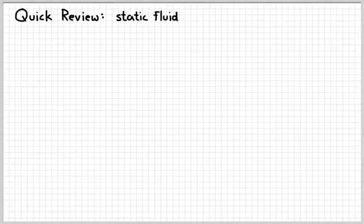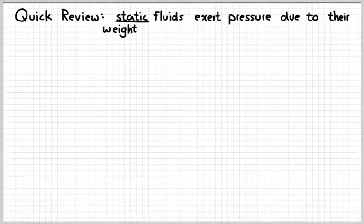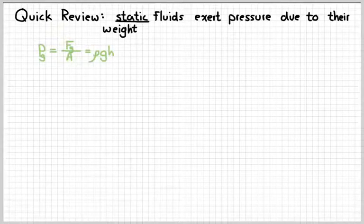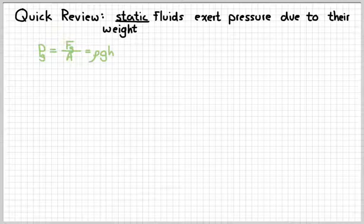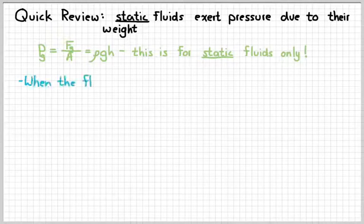So as a real quick review, just so that we don't get ourselves confused later on. Remember that a static fluid, static meaning at rest, exerts pressure on the sides of its container due to its weight. So our basic equation for pressure for a static fluid was that it's simply the weight of the fluid over the area it covers, or pressure equals rho GH. Remember that gives you the gauge pressure, not the absolute pressure. So we have to remember that this is for static fluids only.